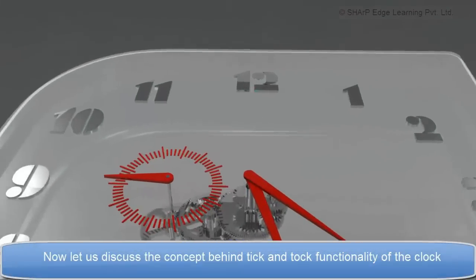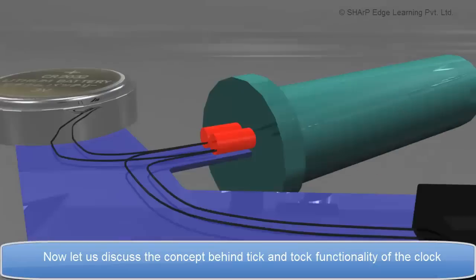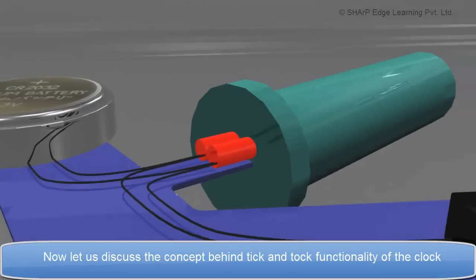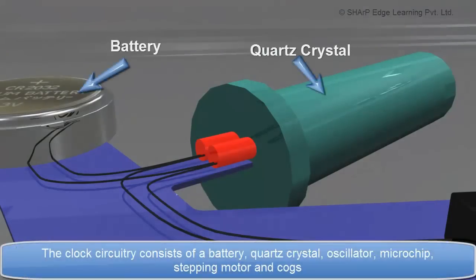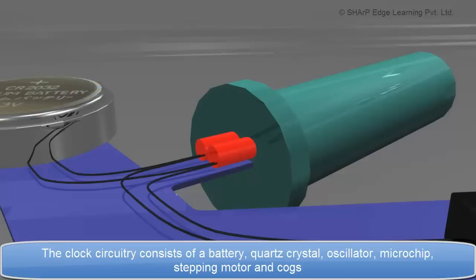Now let us discuss the concept behind tick and tock functionality of the clock. The clock circuitry consists of a battery, quartz crystal, oscillator, microchip, stepping motor and cogs.